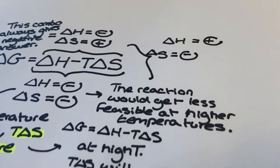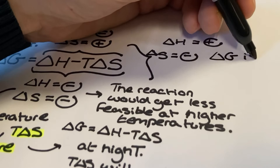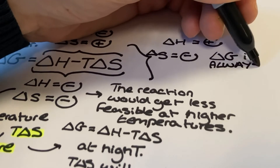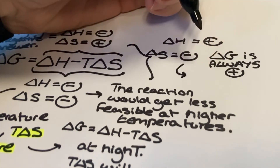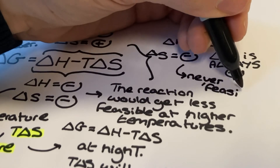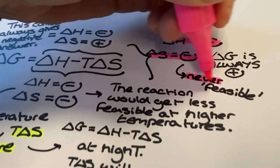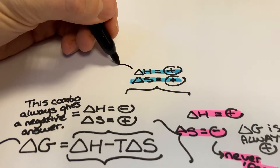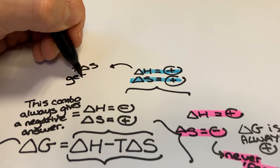Our third combination is an endothermic enthalpy change — a positive delta H — and a negative delta S. This is quite an easy one to sum up: it's never feasible. Mathematically, your delta G value will always be positive at every temperature. This is because the T delta S term gives a negative value, and then we are trying to subtract this negative value from a positive delta H, so the value of delta G is always positive.